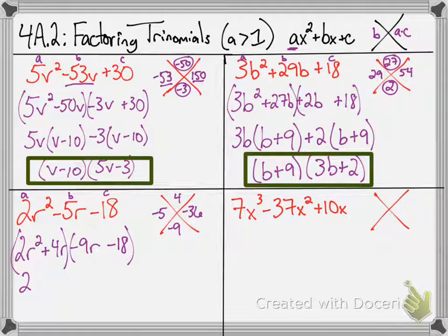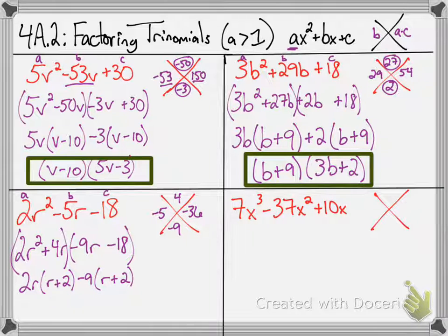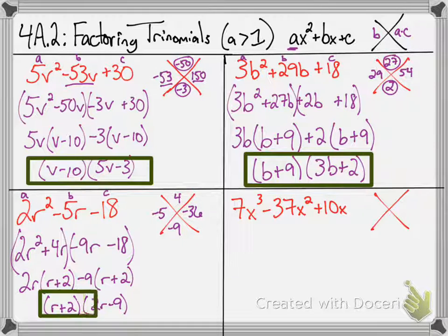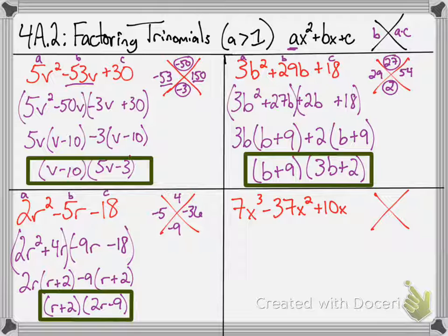My final solution, R + 2. And then 2R - 9 from my GCFs that I took out gives me my second factor, and I have myself a factored expression.